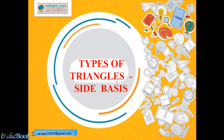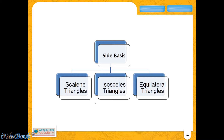Let us look at the types of triangles and we are going to see what are the types of triangle when we classify them on the basis of side. Triangles can also be classified on the basis of their angles but we are going to look at that in the next video. On a side basis, a triangle can be of three types: a scalene triangle, an isosceles triangle, and an equilateral triangle.